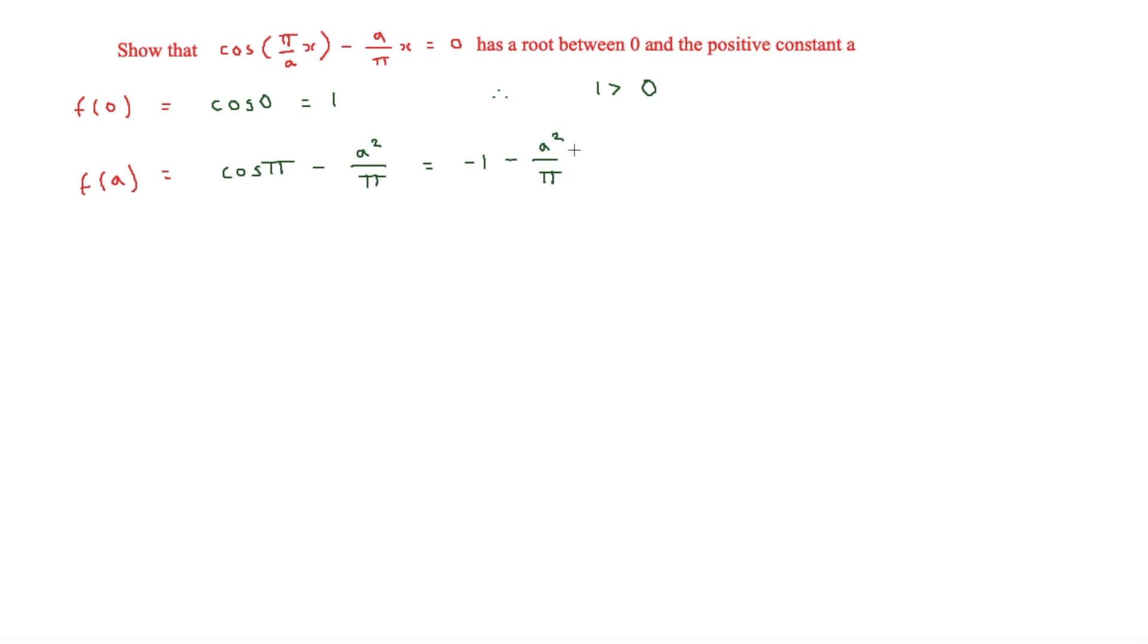Now obviously anything squared is always going to be positive, and this says it's a positive constant anyway. So minus 1 minus something positive means that minus 1 minus a squared over pi is less than 0.